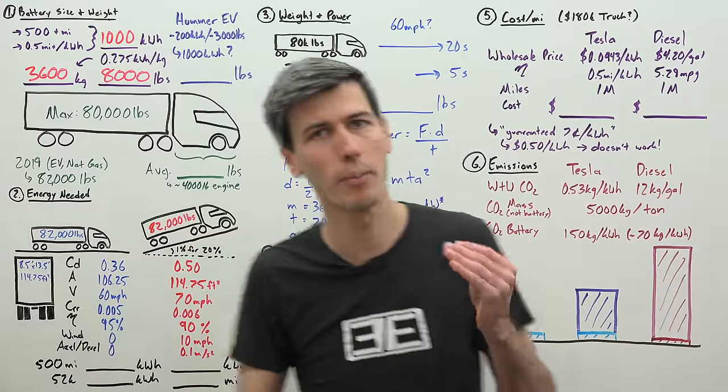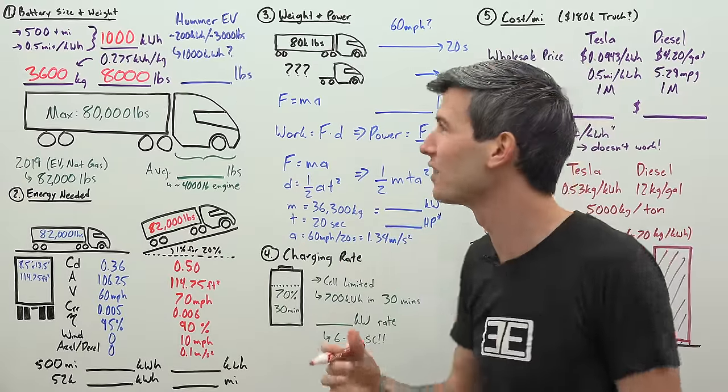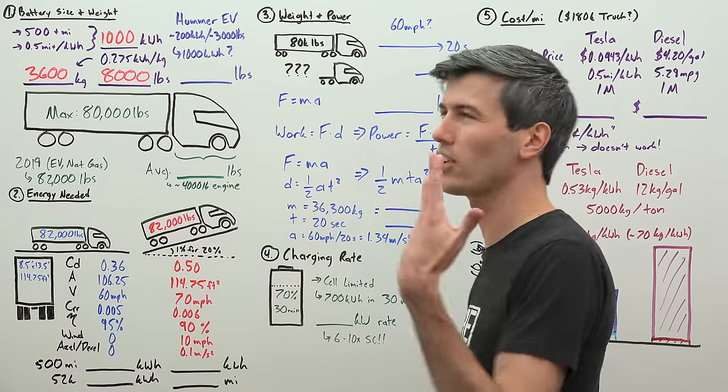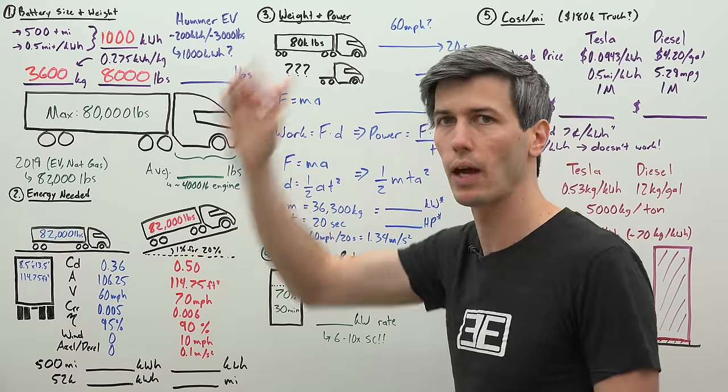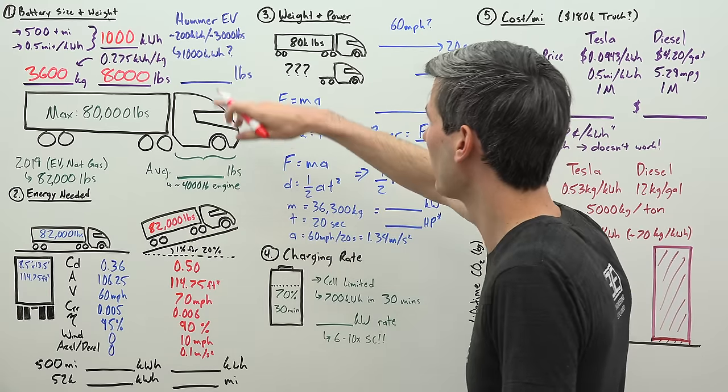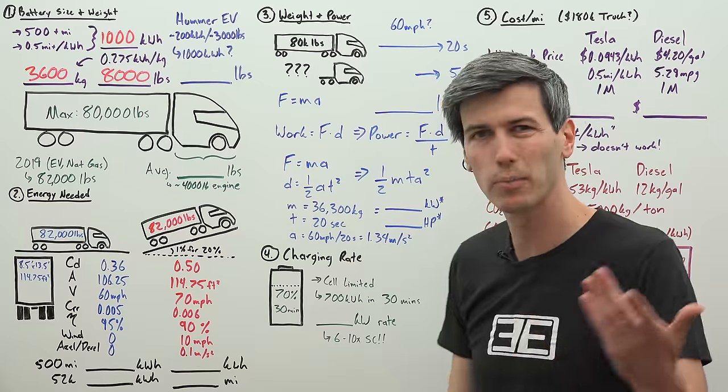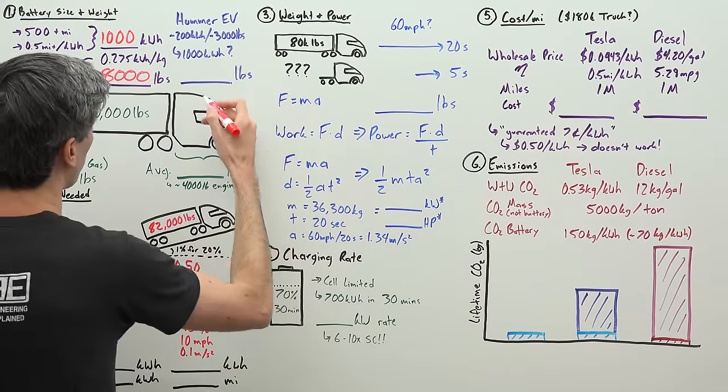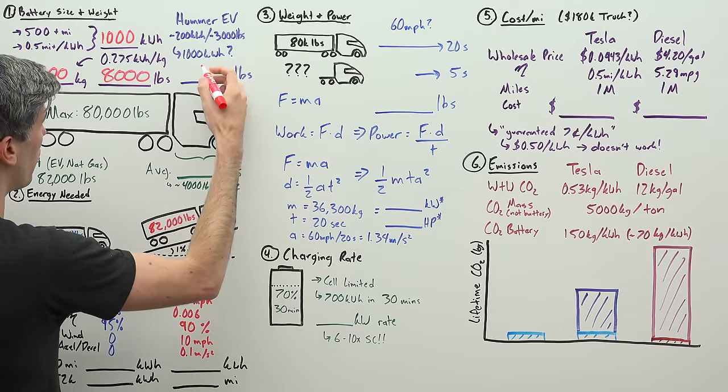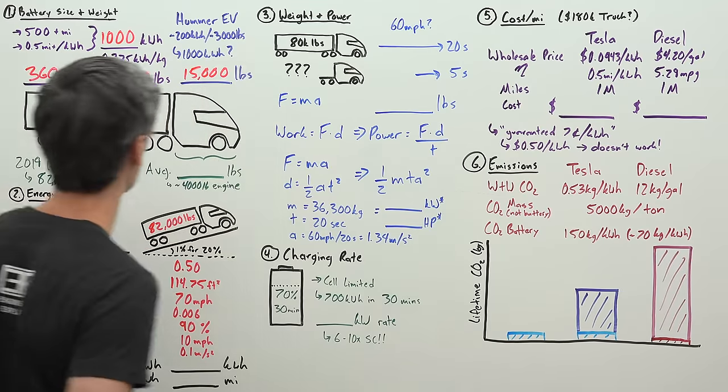This is just the battery cells, so you need a structure for all of that. Looking at a large EV example that can give us the upper boundary: the Hummer EV has a 200 plus kilowatt hour pack that weighs about 3,000 pounds. With some rough math, if you multiply 3,000 pounds by 5 to get a 1 megawatt hour battery pack, you get a 15,000 pound battery pack.